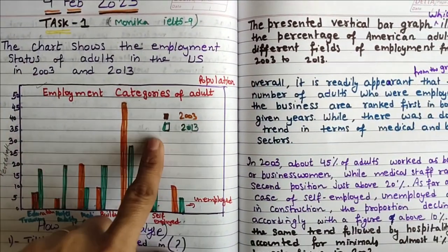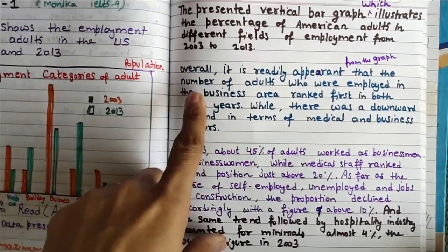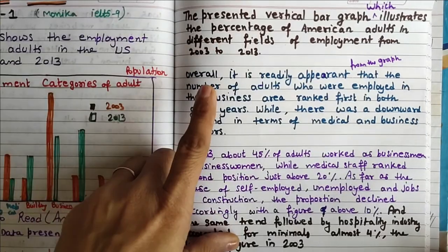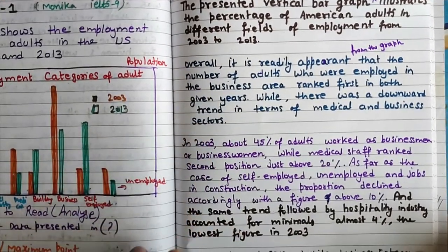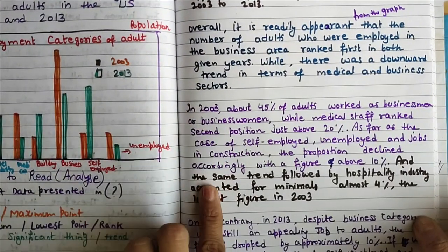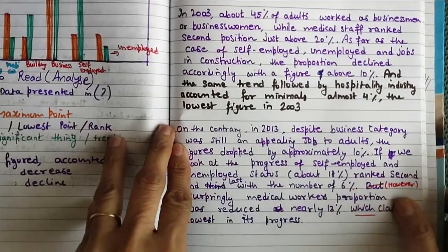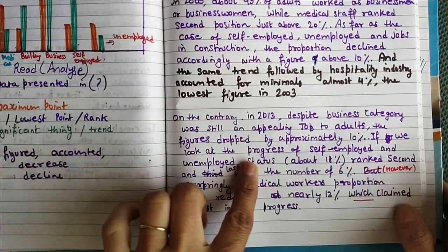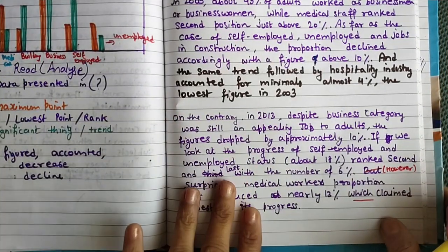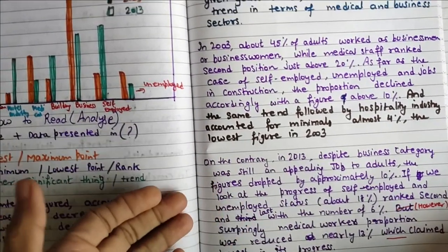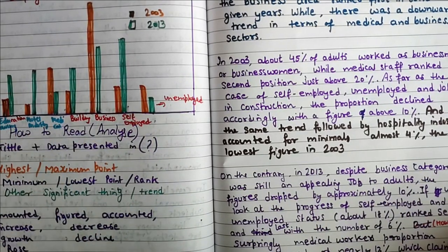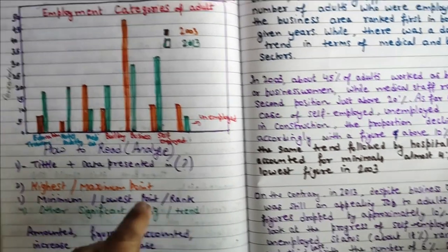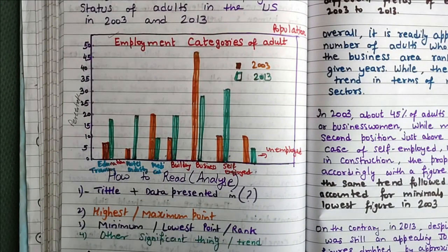Now let's look at the full essay — here is the question statement, the introduction, the overall paragraph, the second body paragraph, the third body paragraph, and a fourth paragraph if you want to write in more detail. You can always write more — there is no problem. Thank you so much.